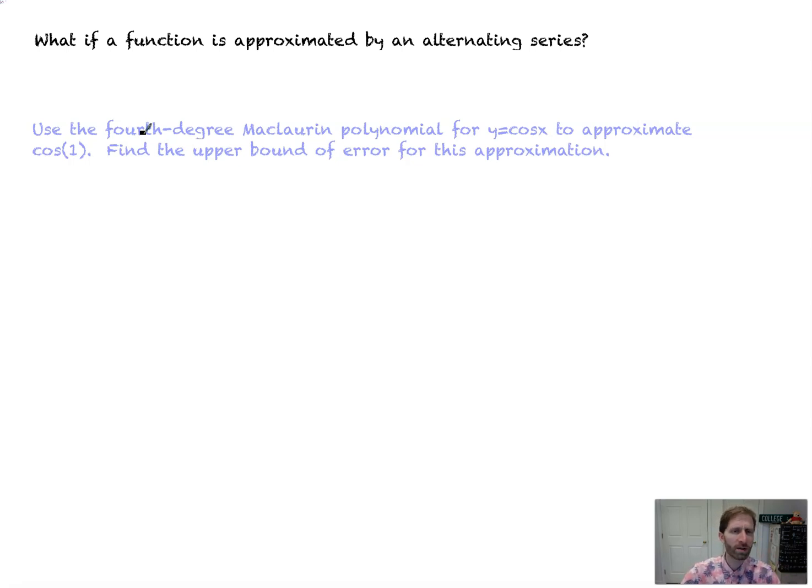So if you're given an alternating series whose terms decrease in absolute value to zero, you can use the alternating series error bound instead of what we just recently learned, the Lagrange error bound. All right, so let's see what this is all about.